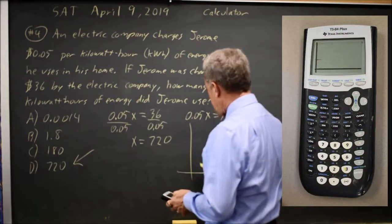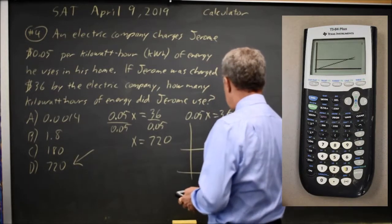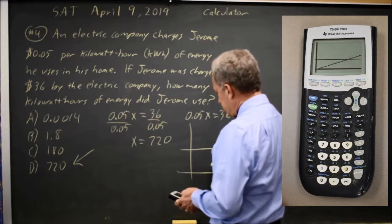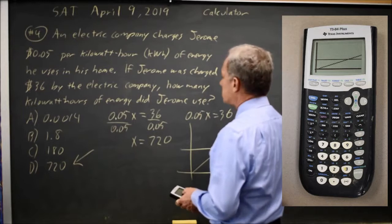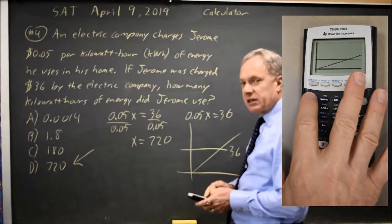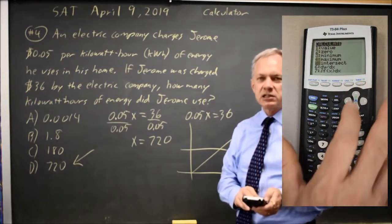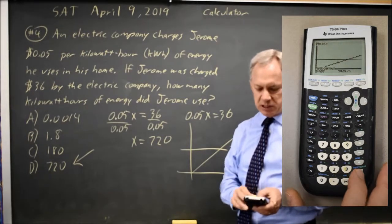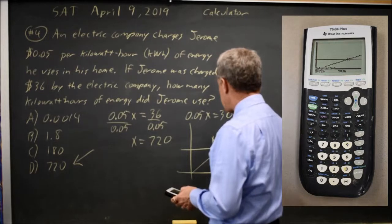my graph looks something like this, y equals 36 and this is 0.05x in my window and if I use second and the trace button, option 5 is intercept, hit enter 3 times and it says the x value at the point of intersection is x equals 720.